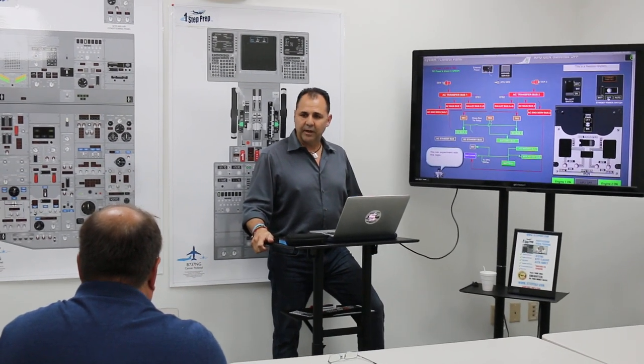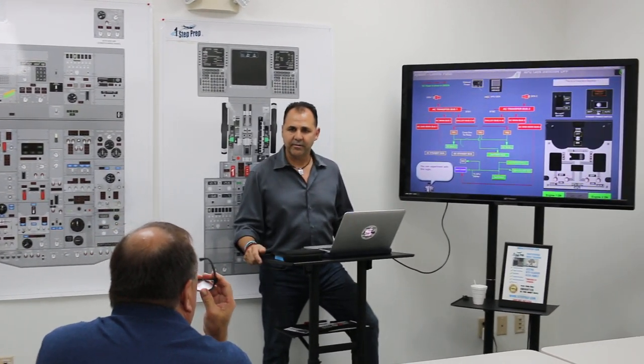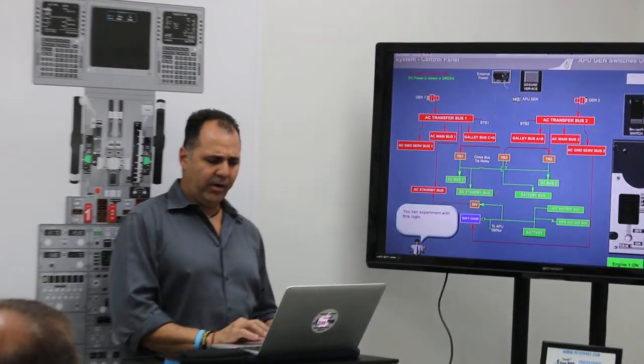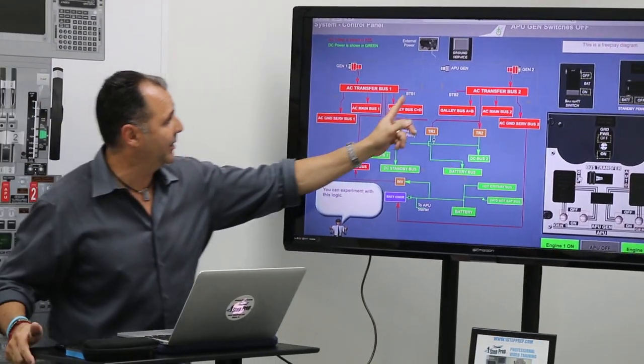If they ask you, can you give me an example where you can use the off position? You're on the electrical smoke or fire. Look over here. When you have an electrical smoke or fire and you're troubleshooting the system, right? The first thing it's going to tell you is put the bus transfer switch off. So you can isolate the buses, right? The left side from the right side, the BTB. Open GB1.